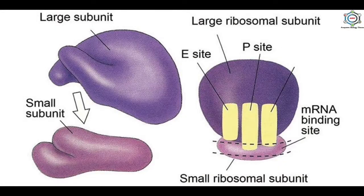Here you can see the structure of ribosomes and their binding sites and role in protein synthesis. Each ribosome consists of large and small subunits. The subunits occur separately when not involved in protein synthesis; the two subunits form an association when protein synthesis starts and undergo dissociation when it stops. Many ribosomes line up on the mRNA chain during protein synthesis, and such a row of active ribosomes is called a polyribosome or polysome.